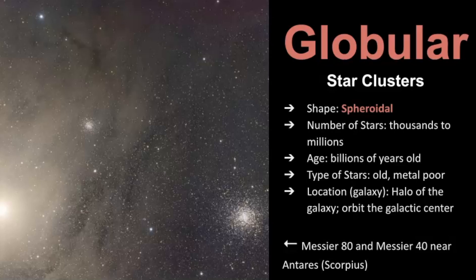Globular star clusters. These are spheroidal shaped star clusters and they have typically thousands to millions of stars. So as you're looking at this photo and I'm describing what globular star clusters are, hopefully you can point out two in this photo. These types of stars are typically billions of years old. They are metal poor and their location in the galaxy is different than open star clusters. They're in the halo of the galaxy. They orbit around the galactic center.